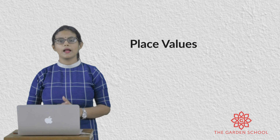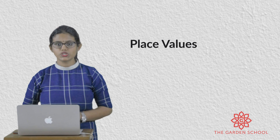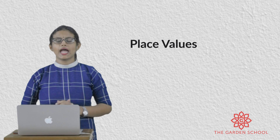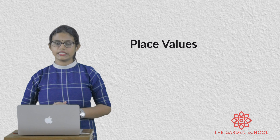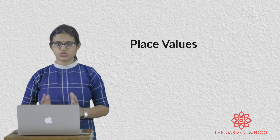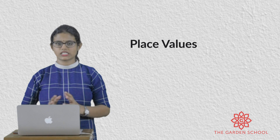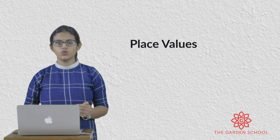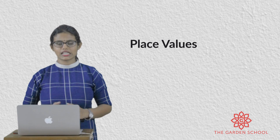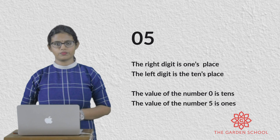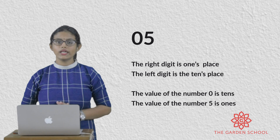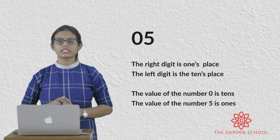Next, you have learnt about place values. There are one-digit numbers and two-digit numbers. One-digit numbers are from 0 to 9, and two-digit numbers are from 10 to 99. In two-digit numbers there will be two digits, and each number has its own position. We always calculate place value from the right — that is from the ones place. The right digit always comes in the ones place and the left digit always comes in the tens place.